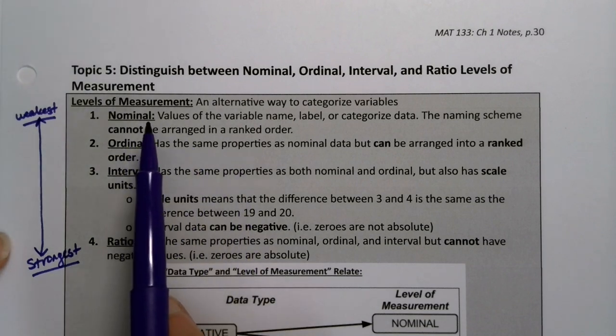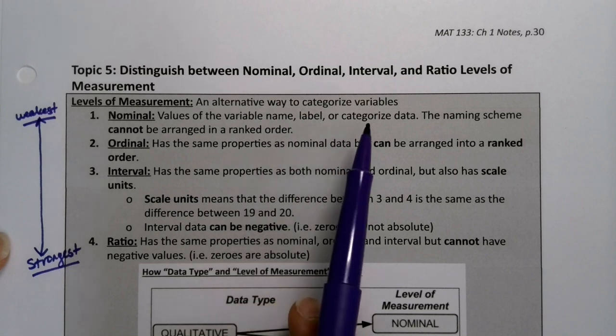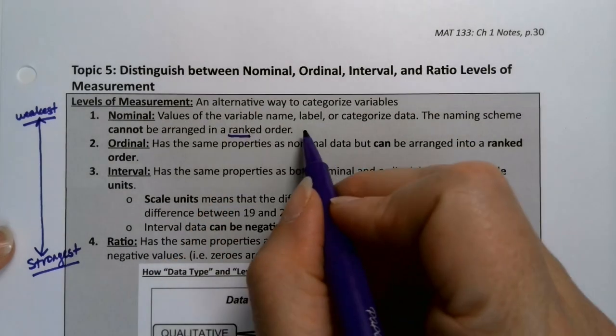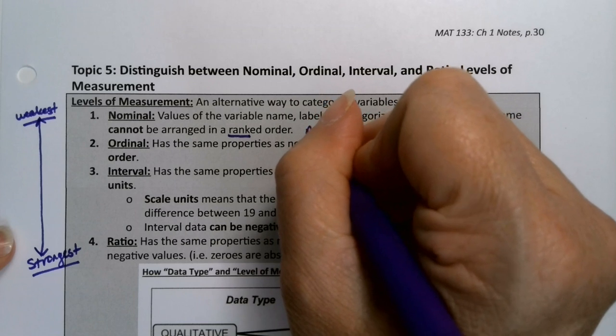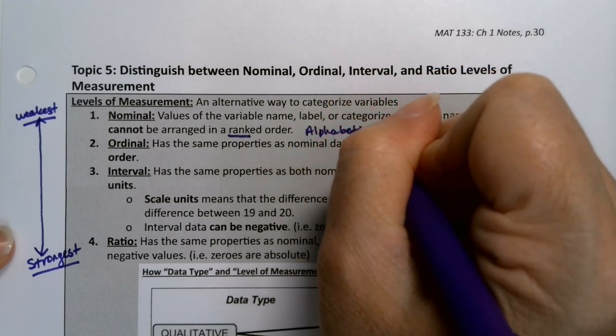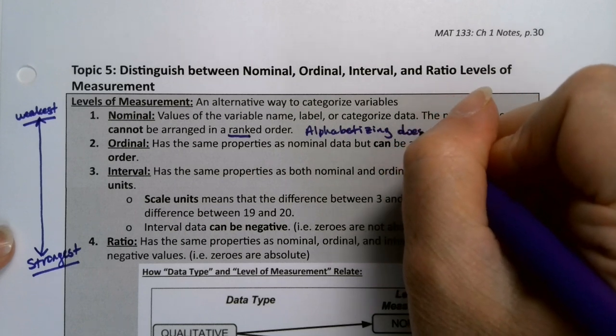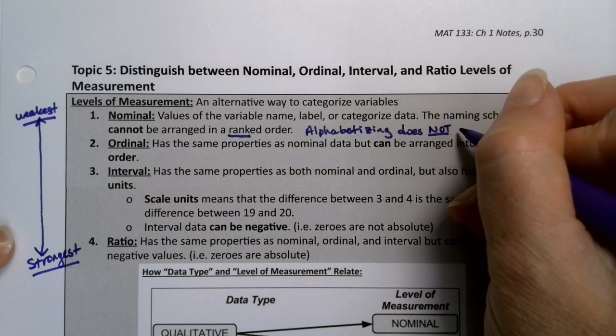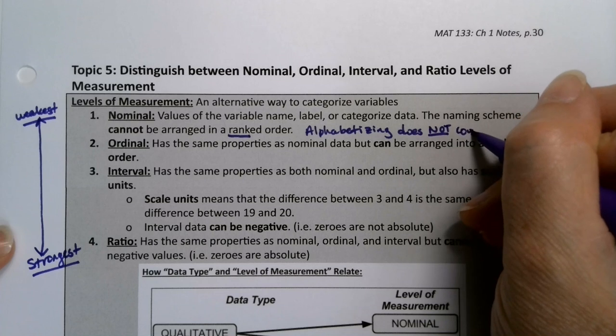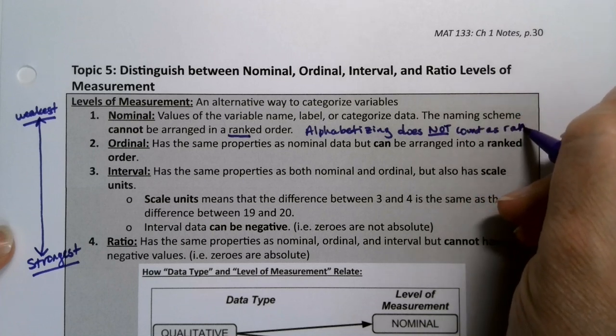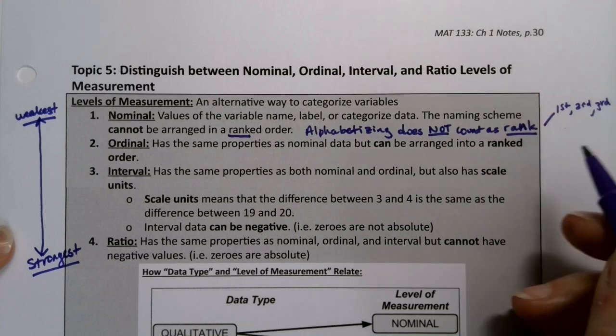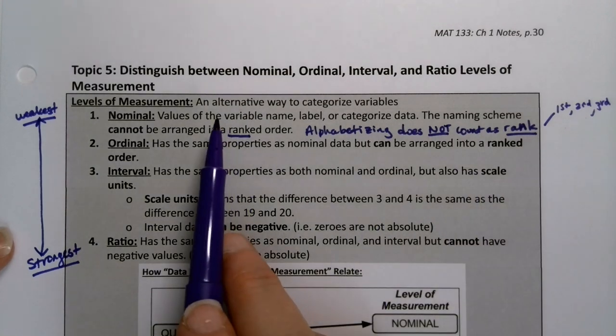So the nominal is values of the variable name, label, and categorize the data, but you cannot arrange it in a ranked order. Now, ranking is important. Ranking is not alphabetizing. So let me just write that alphabetizing does not count as rank.